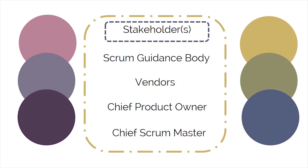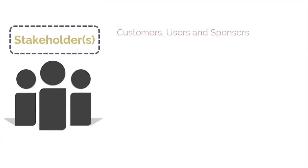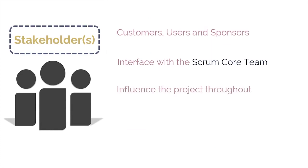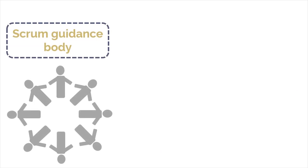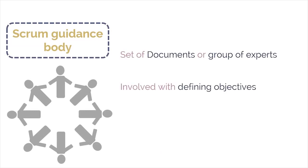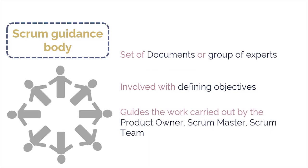The first non-core role is the stakeholder, a collective term that includes customers, users, and sponsors. They frequently communicate with the Scrum core team and influence the project throughout its development. Most importantly, it is for the stakeholders that the project produces its collaborative benefits. Second is the Scrum guidance body, also referred to as the SGB. It is an optional role consisting of a set of documents or a group of experts typically involved in defining objectives related to quality, government regulations, security, and other key organizational parameters. The SGB guides the work carried out by the product owner, Scrum master, and Scrum team.